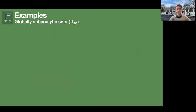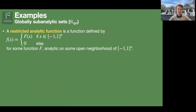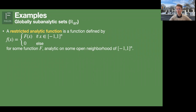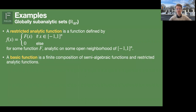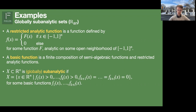Then we go to a larger class: the globally sub-analytic sets, usually denoted R_an. I introduce the notion of a restricted analytic function — it's the restriction of an analytic function. More precisely, you take a function f analytic on an open neighborhood of the unit box, and then you define small f to coincide with big F on the unit box and to be identically zero outside. Thinking about the sine function: you are not going to allow the entire sine function, but you can allow a finite bounded part of it, which then has finitely many zeros. A globally sub-analytic set is given by equalities and inequalities of compositions of such restricted analytic functions and semi-algebraic functions.